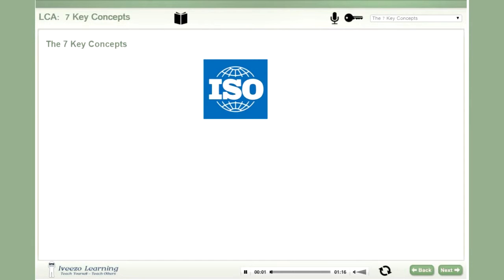The International Organization for Standardization, known as ISO, breaks LCA into four phases: goal and scope, inventory analysis, impact assessment, and interpretation.